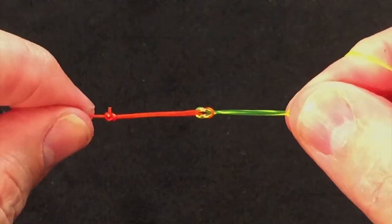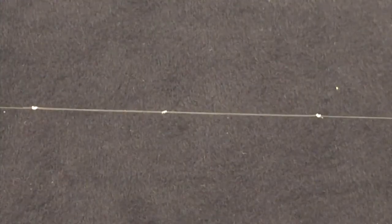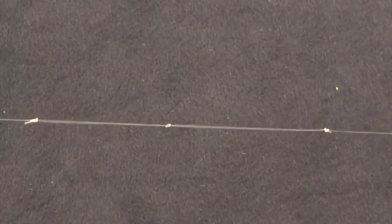So that is the loop-to-loop join in the red and yellow. It's going to look like this: tight, small, neat. The commonest use of the loop-to-loop join is joining a leader to a fly line because most fly lines these days have a welded loop on the front end.